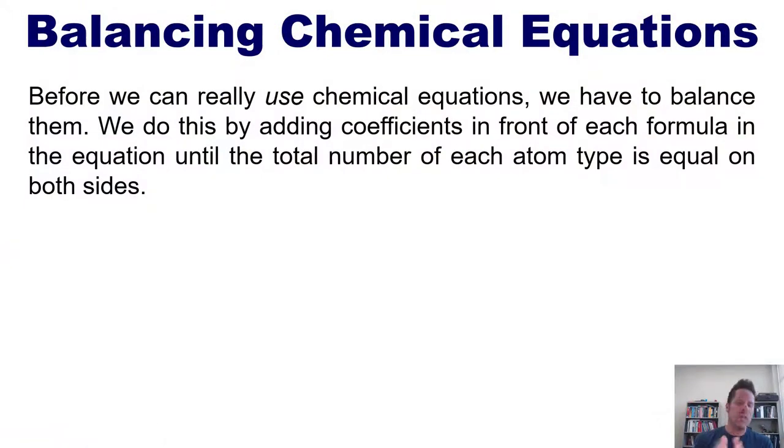Before we can really use chemical equations, we have to balance them. We do this by adding coefficients in front or to the left of each formula in the equation until the total number of each atom type is equal on both sides. The best way for me to show you how to do this is to actually take you to the board.